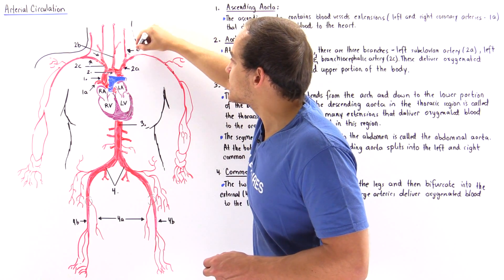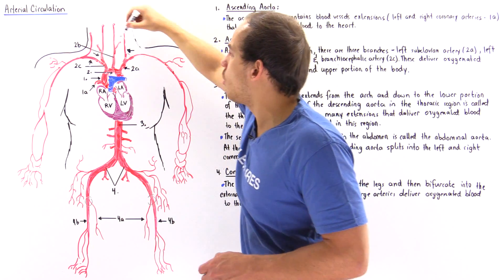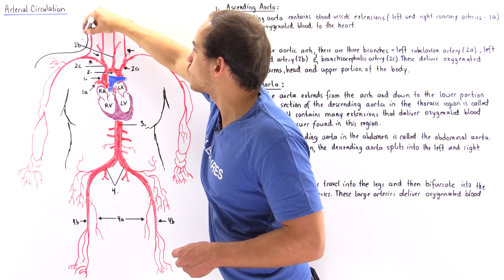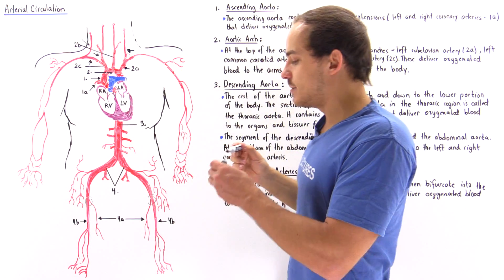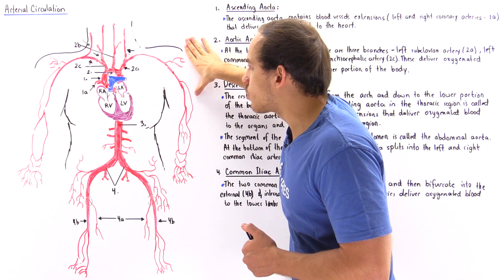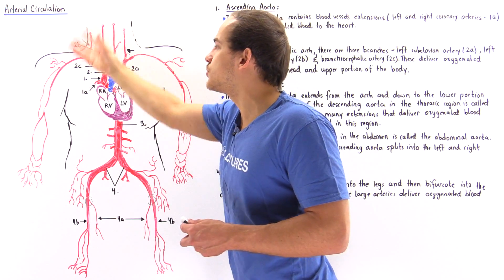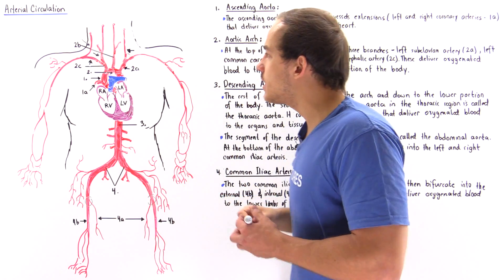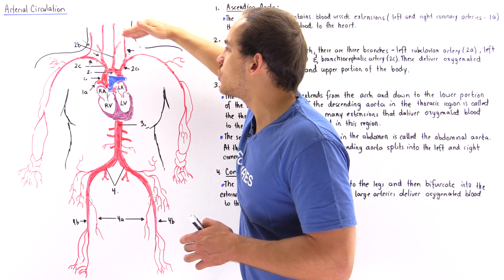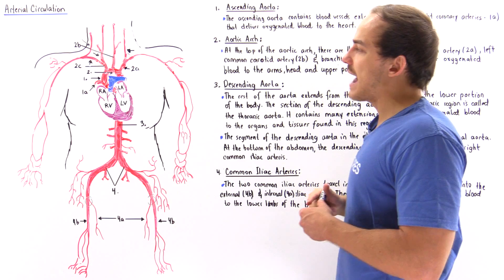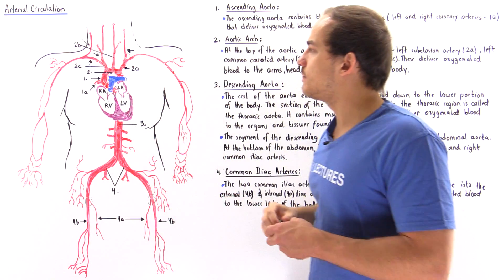In the same way that the left subclavian artery forms the left vertebral artery, we also form the right vertebral artery here — so we have symmetry taking place. The subclavian arteries, common carotid arteries, and vertebral arteries all bring oxygenated and nutrient-filled blood to the organs and tissues in the upper portion of our body: the head, neck, shoulders, and arms. The coronary arteries bring blood to the heart.